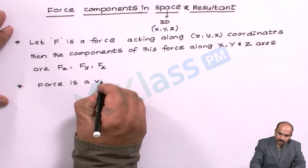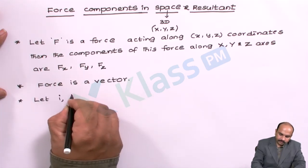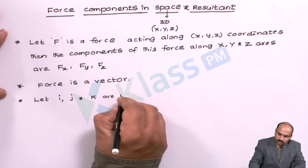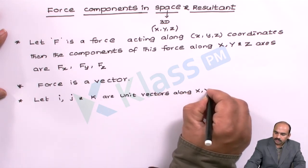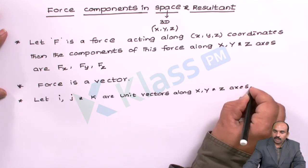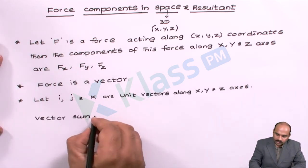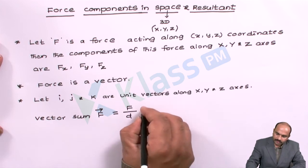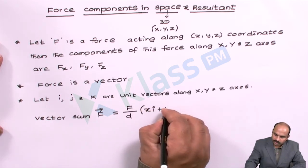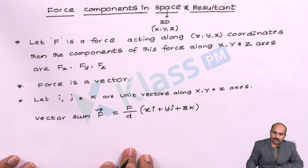Force is a vector. Let i, j, and k be unit vectors along x, y, z axes. Then the vector sum of the force F is given by F = Fx·i + Fy·j + Fz·k. This is the vector sum of the force for the given three-coordinate system.